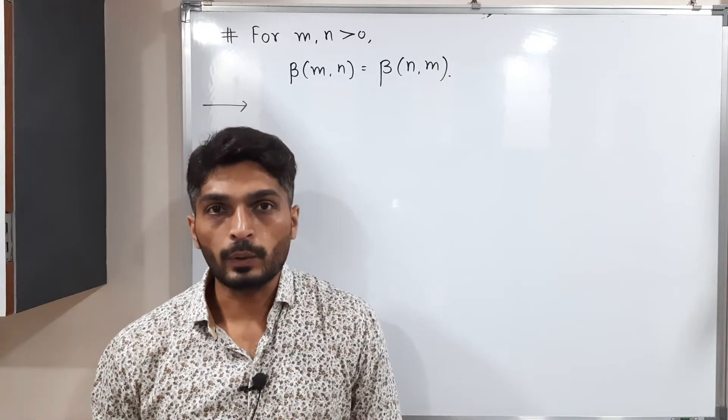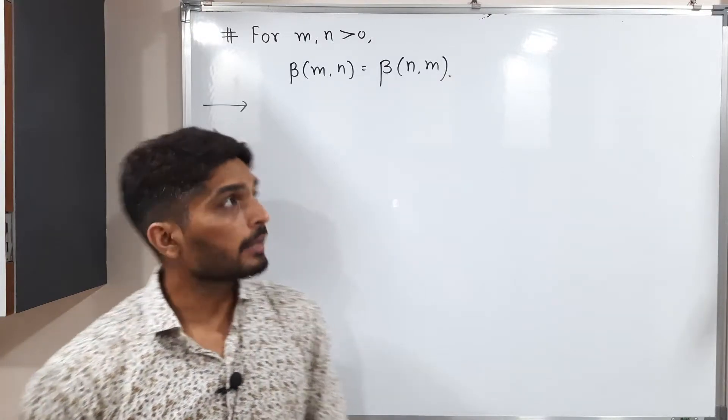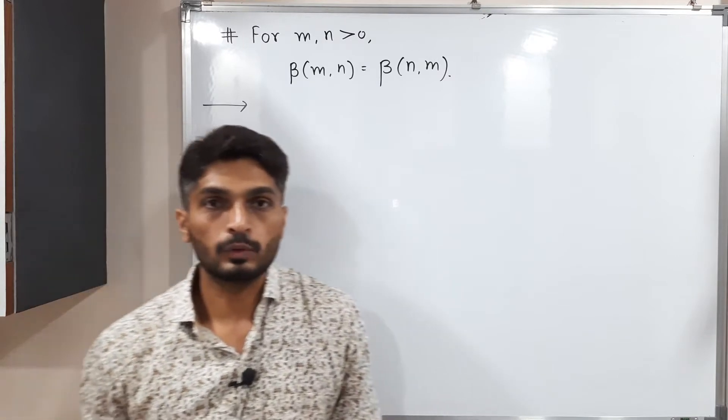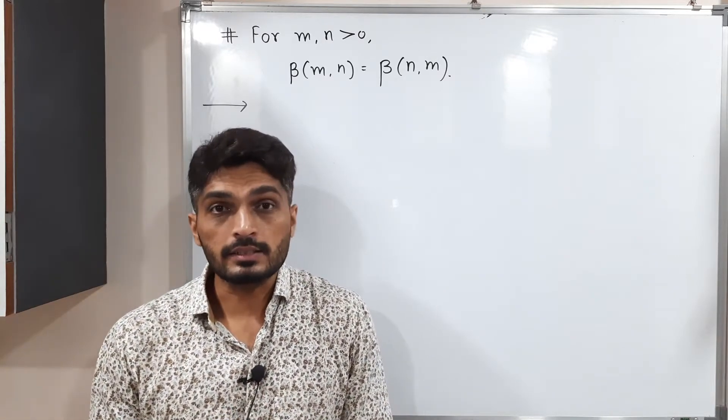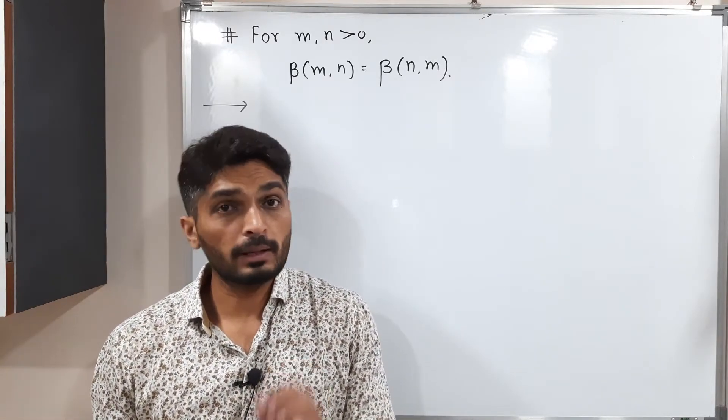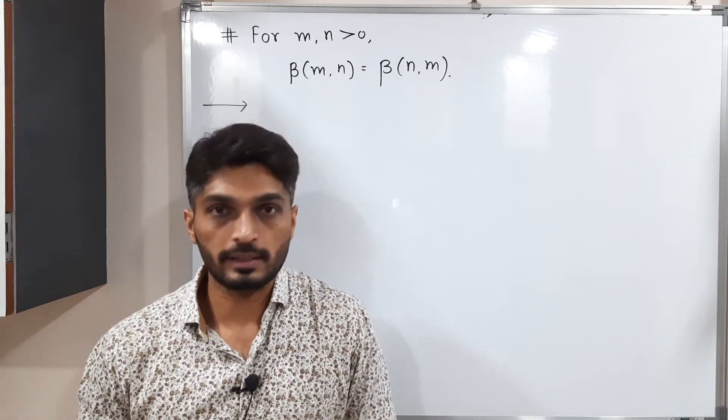In my previous video, I had asked one question: Can we get equality here? So the answer is yes, we get equality. Beta of mn is equal to beta of nm. So let us prove this thing.